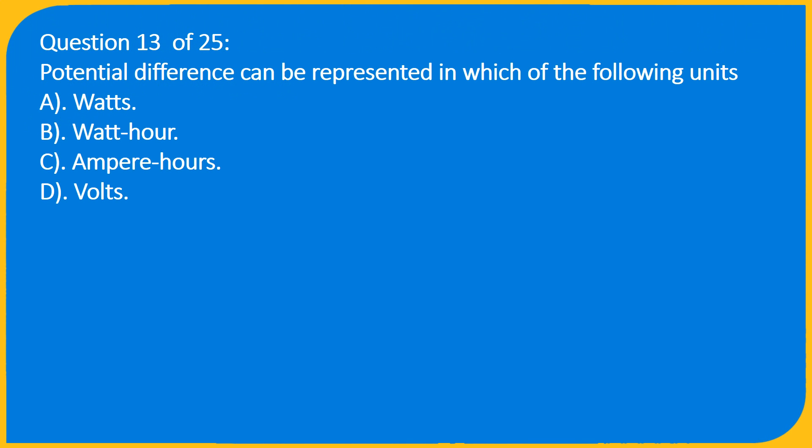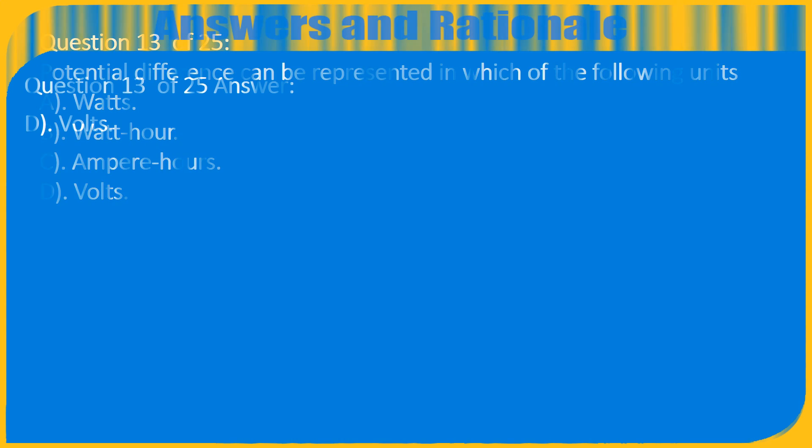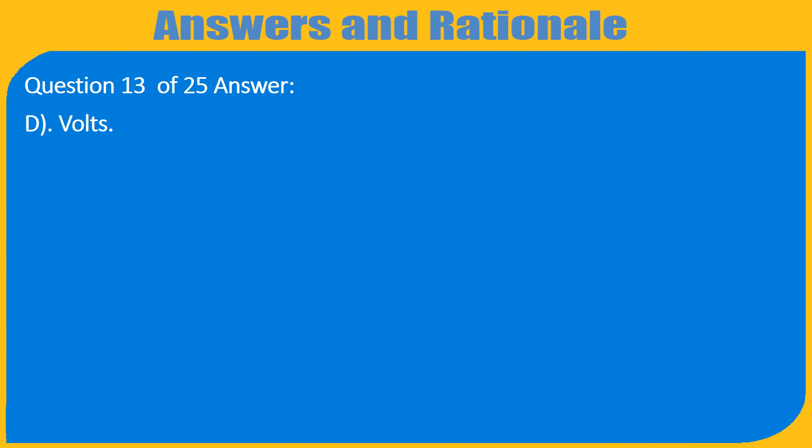Question 13 of 25: Potential difference can be represented in which of the following units? A. Watts, B. Watt hour, C. Ampere hours, D. Volts. Answer: D. Volts.